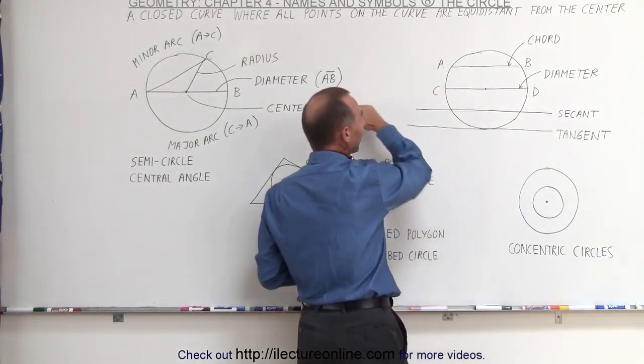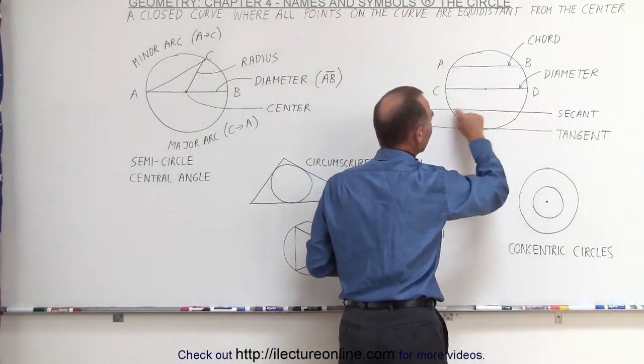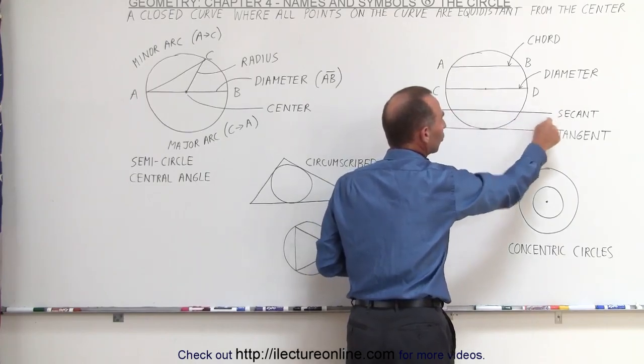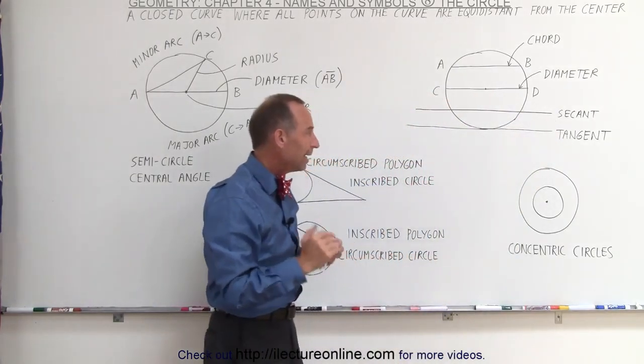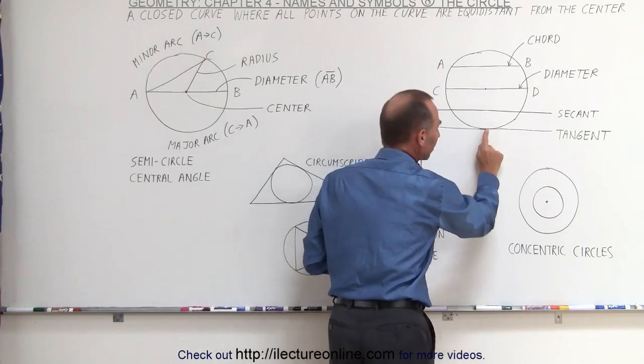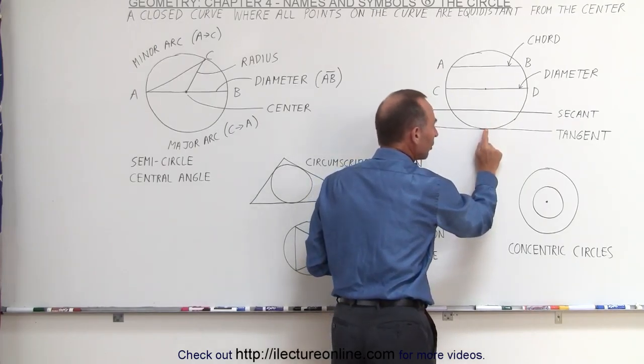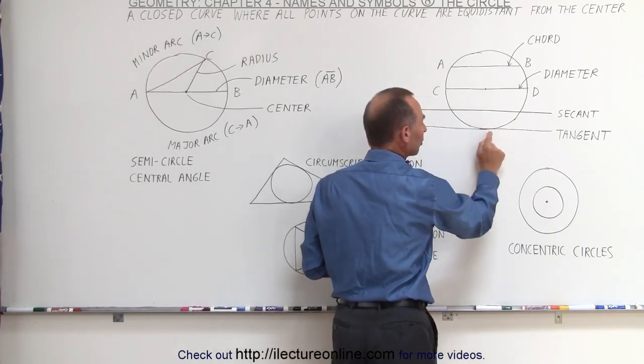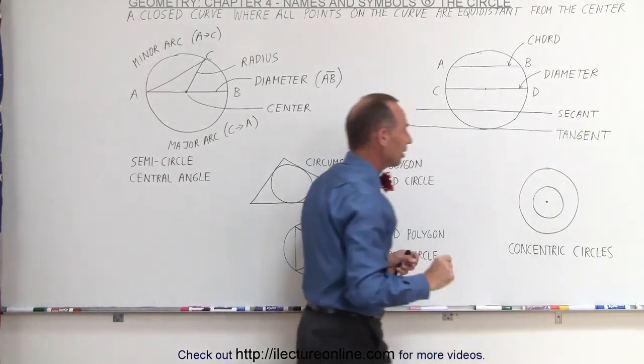Now if we draw a line through the circle, and it hits the circle at two separate points like this, that's called the secant line. And if we draw a line in such a way that only touches the circle at one particular point, only one point right here on the edge of the circle, then that's called the tangent line.